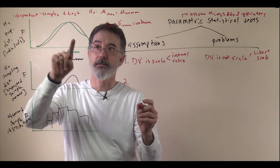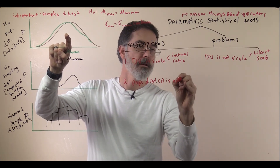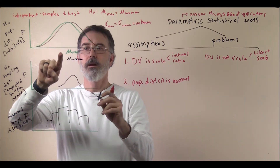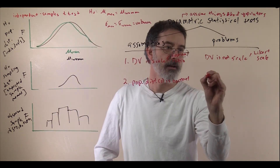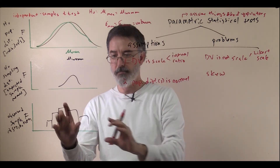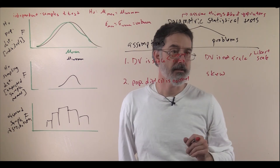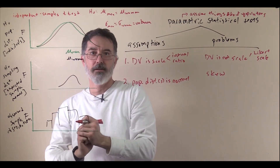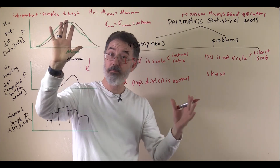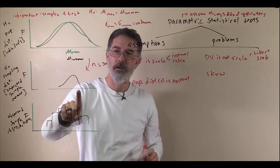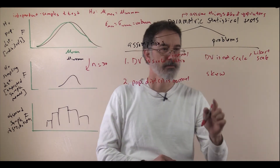Another assumption of these parametric tests is that the population distribution is normally distributed. So here there is a men's and a women's distribution, and they are both normal distributions. In practice, it is pretty common to get data suggesting the population is not perfectly normally distributed — it might be skewed. Generally, that is not a huge problem if you have a large enough sample size, because the central limit theorem tells us that even if the population is not normally distributed, if your sample size is large enough — say 30 or more — the distribution of sample means will be normally distributed anyway. So skew is usually not a big problem.